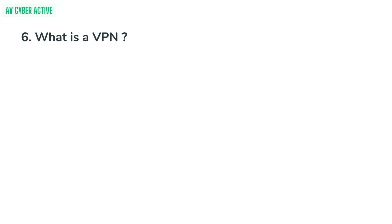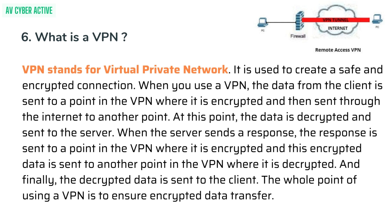Almost all cybersecurity interview questions will include this topic. A VPN is used to create a safe and encrypted connection. When you use a VPN, data from the client is sent to a point in the VPN where it is encrypted and then sent through the internet to another point, where it is decrypted and sent to the server. When the server sends a response, it is encrypted at a VPN point, sent to another point, decrypted, and finally delivered to the client. The whole point of using a VPN is to ensure encrypted data transfer.